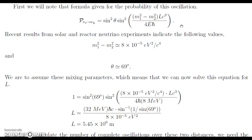And recent results from the solar and reactor neutrino experiments indicate the following values. Here we have the differences of the masses squared, which is approximately equal to 8 times 10 to the negative 5th electron volts squared over the speed of light to the 4th. The mixing angle is approximately 69 degrees. We're just going to take that these mixing parameters are correct, and we can use them in the problem, and then we simply just have to solve for L.